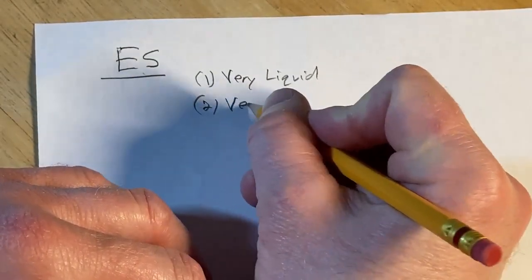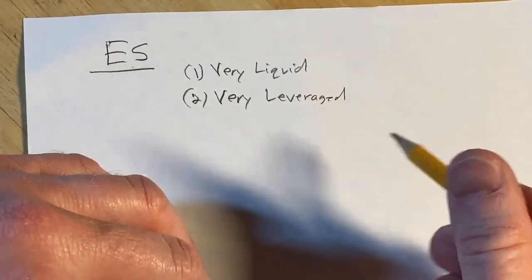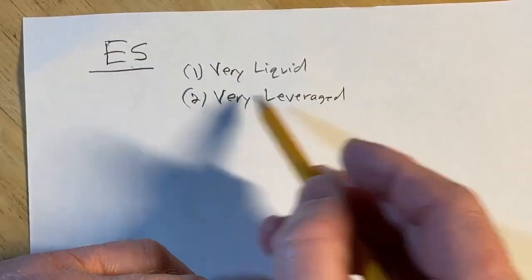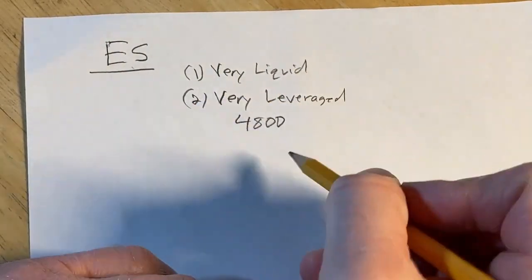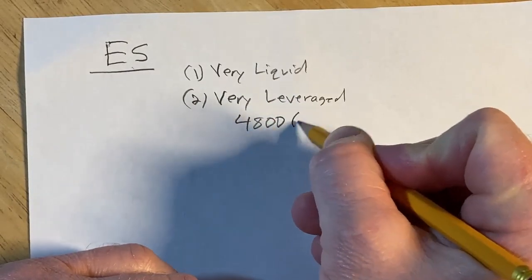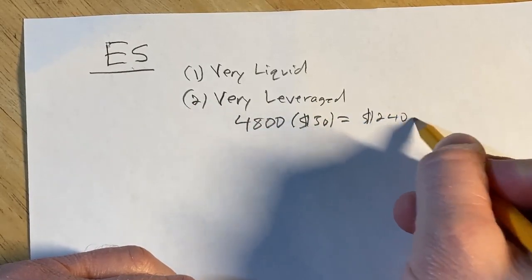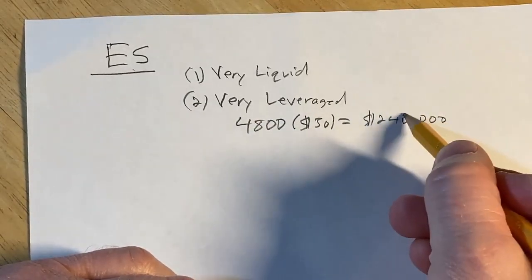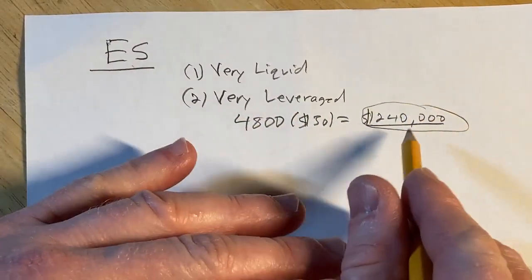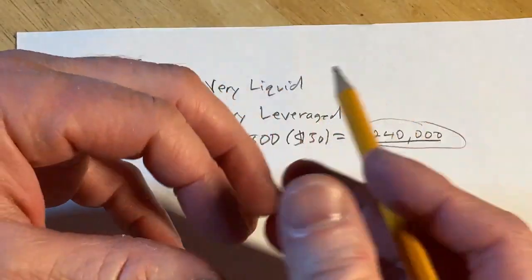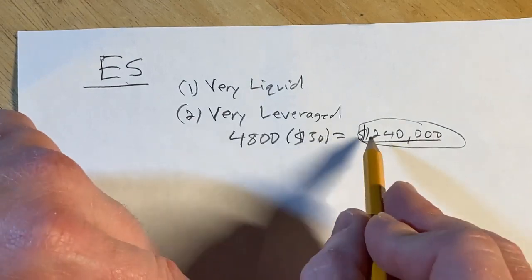It's also very leveraged. And I think that this is another reason why it's very liquid is because it's very leveraged. Let's say the price of the futures contract is $4,800. Well, what is this worth in dollar value? Well, you basically multiply by 50 and you get $240,000. So if you buy one contract, you're in command of this much money. This basically represents equities, stocks in the S&P 500 index in some sense.